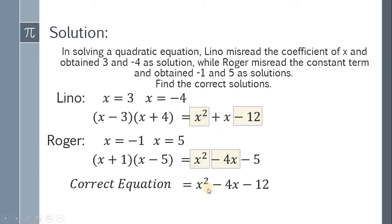To find the correct solution, we need to solve this quadratic equation. Using factoring, we have x minus 6 multiplied by x plus 2 equals 0. Solving for x, we get x equals 6 and x equals negative 2. Therefore, the correct solutions are x equals 6 and x equals negative 2.